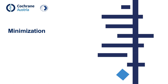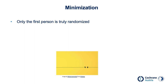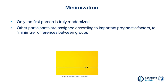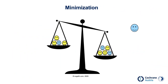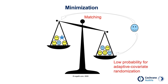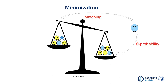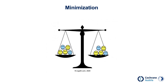Minimization pursues the same goal as covariate adaptive randomization but takes a slightly different approach. In minimization, only the first person in a study is truly randomized. The other participants are assigned on the basis of important prognostic factors to minimize differences. Only if groups are balanced will a study participant be randomly assigned again. If the prognostic factors are not balanced between treatment groups, the next participant with that factor will be matched and assigned to the group where it is underrepresented — unlike covariate adaptive randomization, there is no residual probability of assignment to the other group. The goal remains to achieve treatment groups that are balanced regarding prognostic factors.